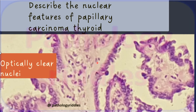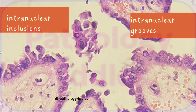Describe the nuclear features of papillary carcinoma of the thyroid. As you can see, there are optically clear nuclei, overcrowding, overlapping, grooving, and intranuclear inclusions — visible here. These are cytoplasmic intranuclear inclusions, where cytoplasm tends to infiltrate into the nucleus.